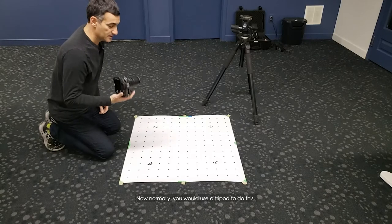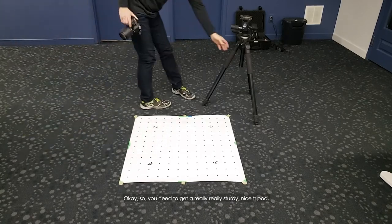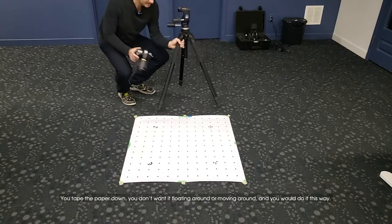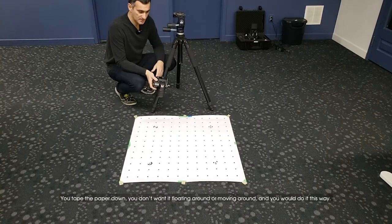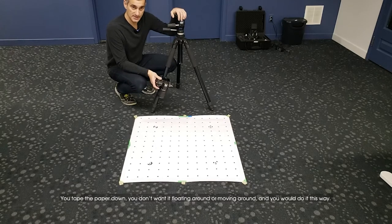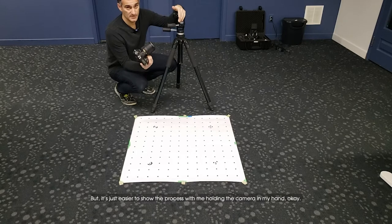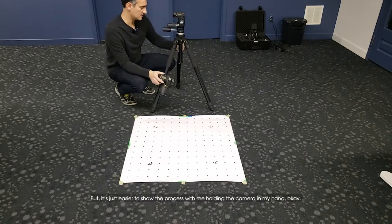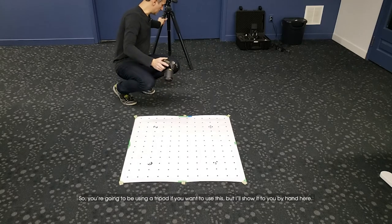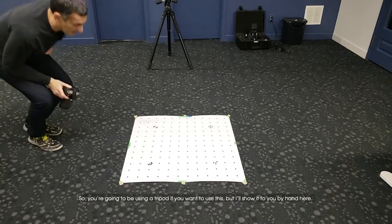Now normally you would use a tripod to do this. You need to get a really sturdy nice tripod. You tape the paper down, you don't want it floating around or moving. But it's just easier to show the process with me holding a camera in my hand. You're going to be using a tripod if you want to use this, but I'll show it to you by hand here.